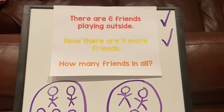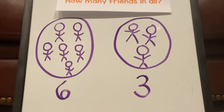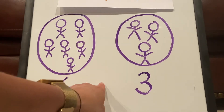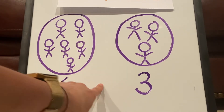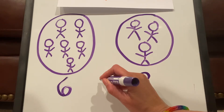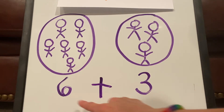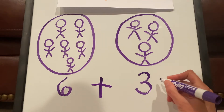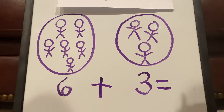Do you think we need to add or subtract? That's right, we need to add. So when we add, what symbol do we need between the numbers? We need a plus sign. We have six plus three, and then we need an equal sign. And now we're ready to solve.